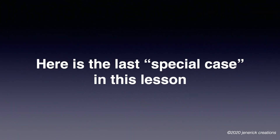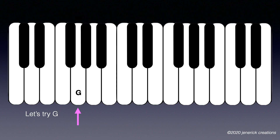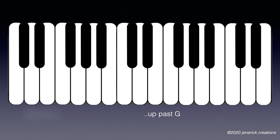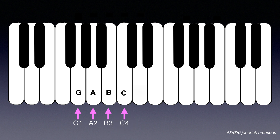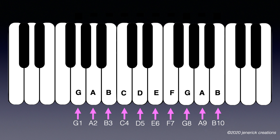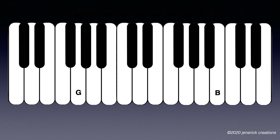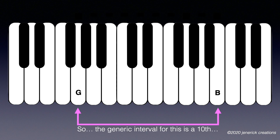Here's the last special case in this lesson. Let's try G up past G up to B: 1, 2, 3, 4, 5, 6, 7, 8, 9, 10. So the generic interval for this is a tenth.